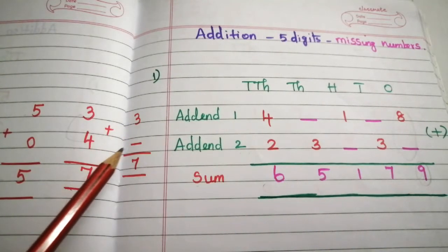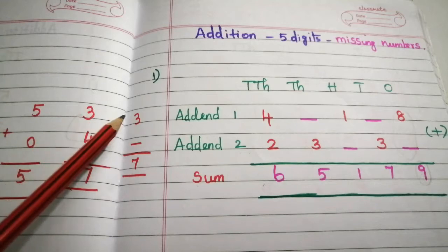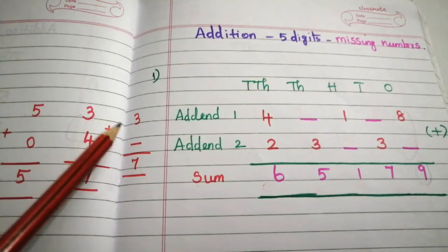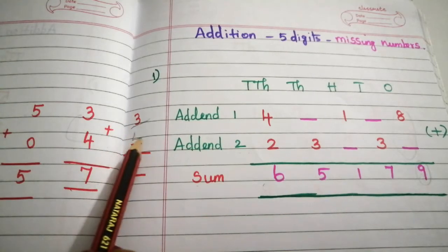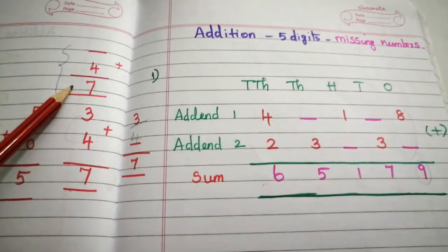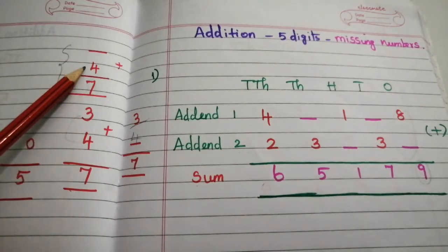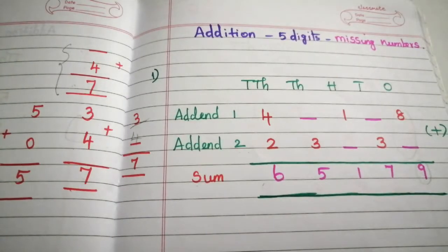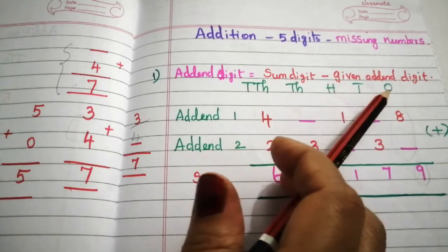Consider the problem 3 dash 7. One addend is given, the second addend is missing, and we know the sum digit. To find the missing addend, we subtract the given addend from the sum digit. So 7 minus 3 is 4. Similarly, if addend 1 is missing and addend 2 and sum are given, we subtract the given addend from the sum digit. So the addend digit equals sum digit minus given addend digit.